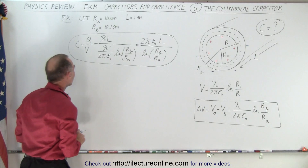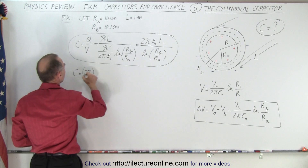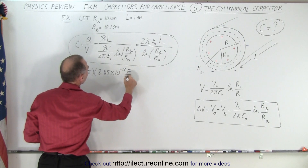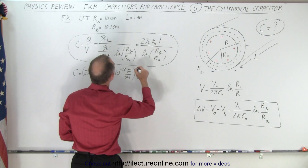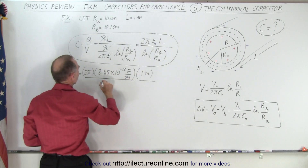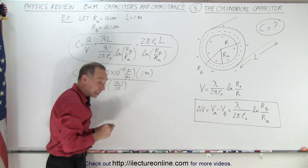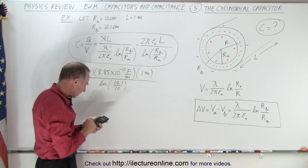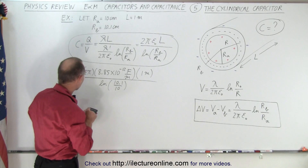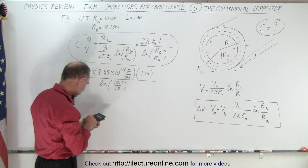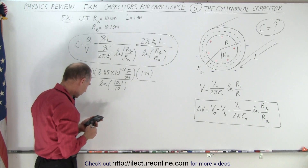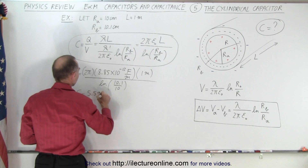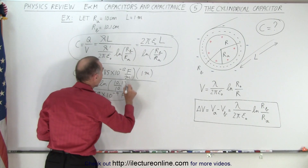Now let's plug in the values and see what we get for the capacitance. C equals two pi times epsilon sub nought, which is 8.85 times 10 to the minus 12 farads per meter, times the length of 1 meter, divided by the natural log of 10.1 divided by 10. Using a calculator: take 10.1 divided by 10, take the natural log of that, take the inverse, times 2 times pi, times 8.85×10⁻¹², times 1. We end up with 5.59 times 10 to the minus 9 farads. So that is the capacitance of that particular cylindrical capacitor.